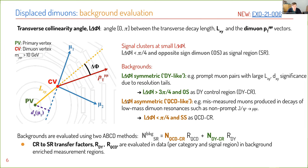For backgrounds, we can have delta-phi symmetric backgrounds — for example, prompt muon pairs with large parent displacement due to resolution tails, called Drell-Yan-like, which we study in a control region with large collinearity. We can also have delta-phi asymmetric backgrounds, such as mismeasured muons producing non-prompt J/psi to mu mu. We use as a control region small collinearity with same-sign-like muons. Backgrounds are evaluated using an ABCD method, taking yields in these two control regions and multiplying by transfer factors evaluated in data in background-enriched measurement regions.